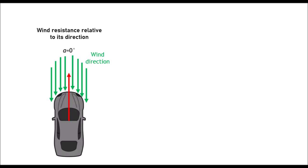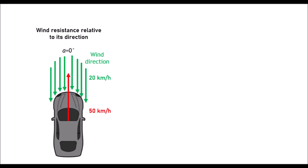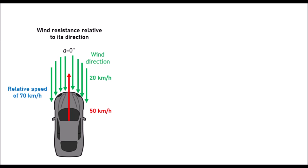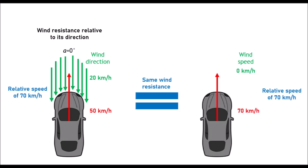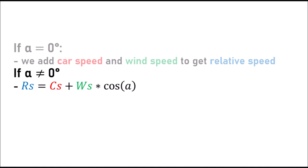Next test is the relative speed. Now what is relative speed? To understand, we're going to look at an example. So a car going at 50 km/h with a direct wind speed of 20 km/h will be subject to a relative speed of 70 km/h. It will receive the same wind resistance as a car going at 70 km/h without any wind. So we simply add the car speed and the wind speed to get relative speed. And this is true if the wind is front-facing. If there is an angle alpha, the wind speed taken into account is the product of the real wind speed and the cosine of that angle.